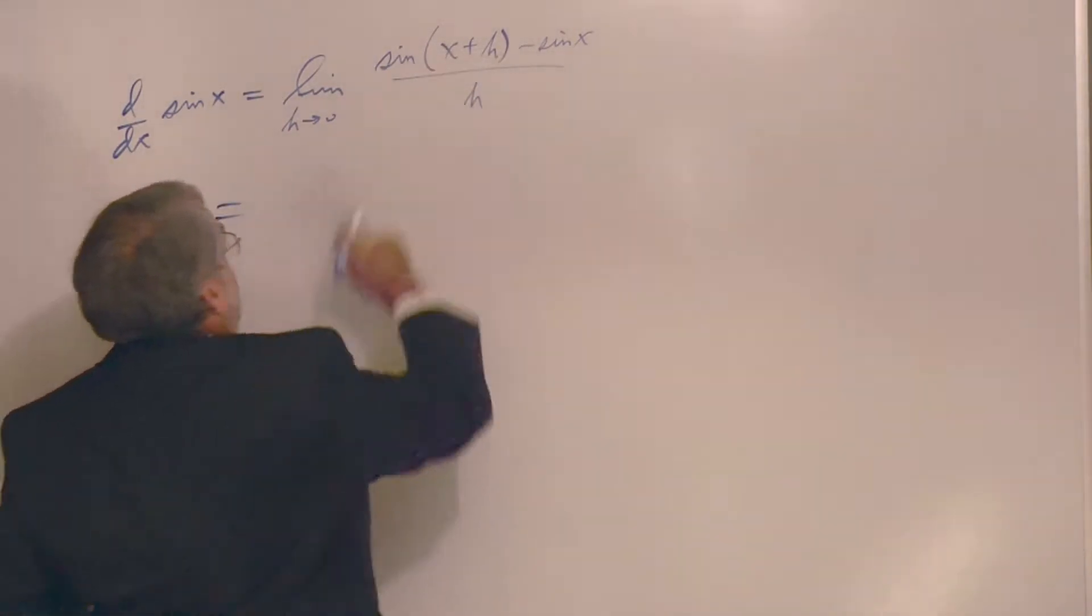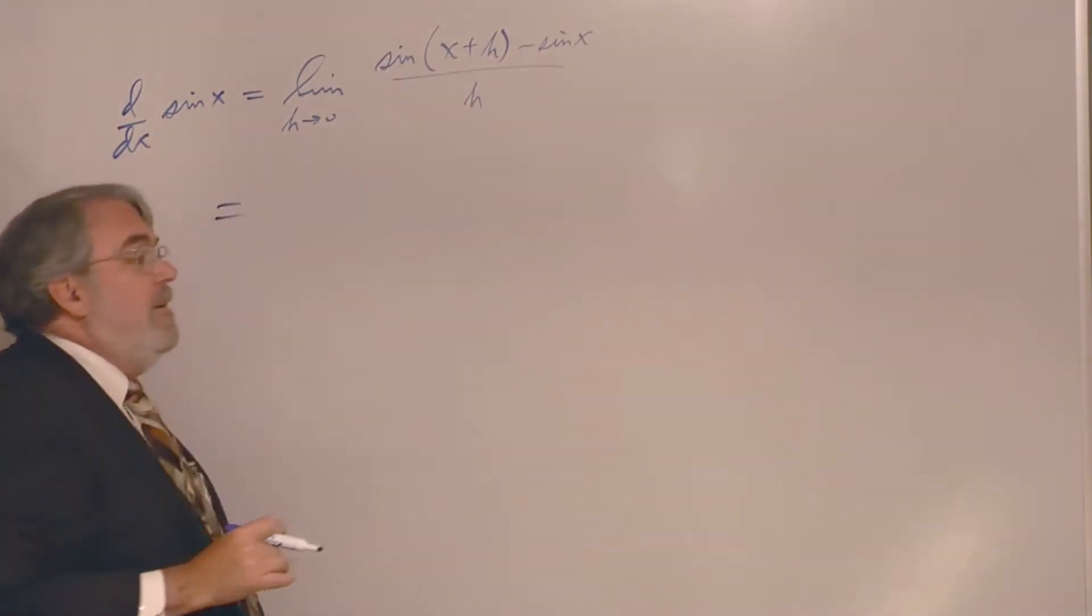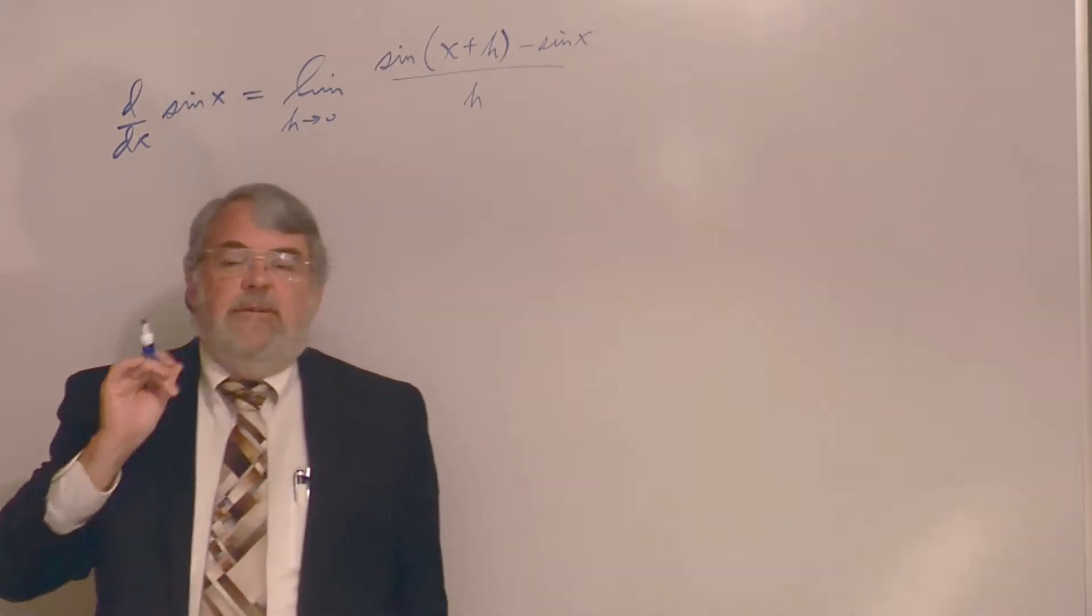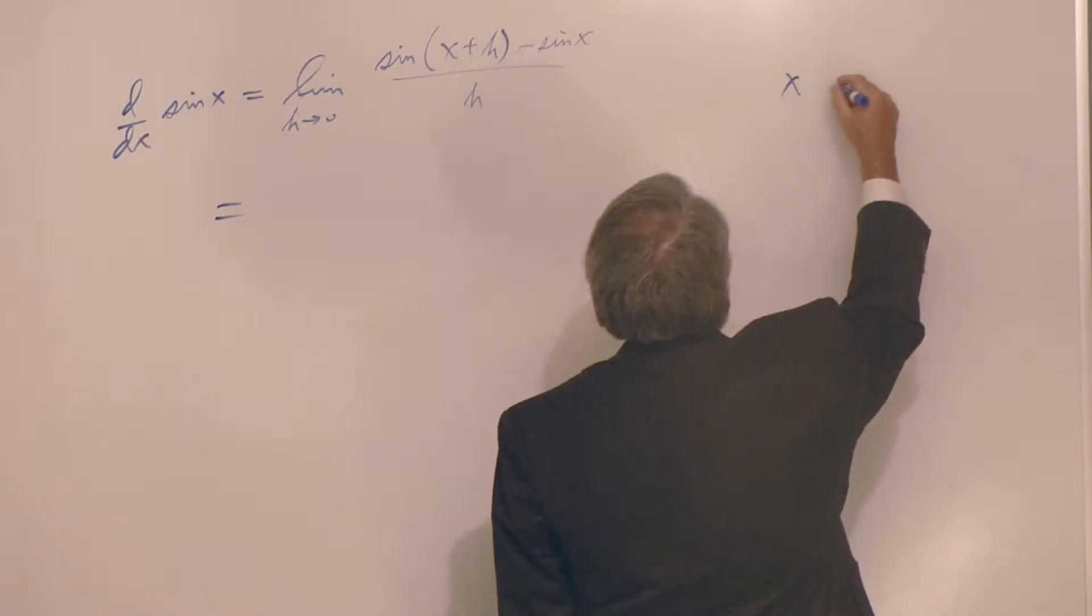What do you do with this? Well, first of all, we do have an identity that allows us to expand the sine of a sum of two angles. And incidentally, a very important point to make here, x is in radians.